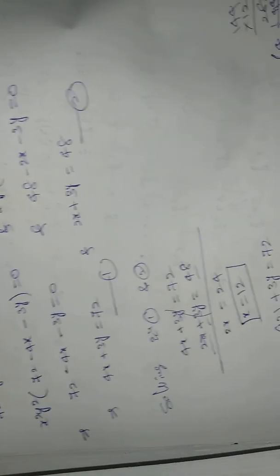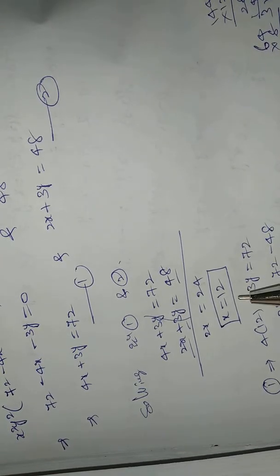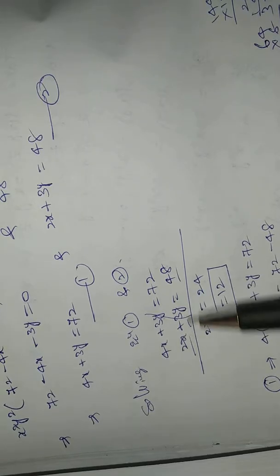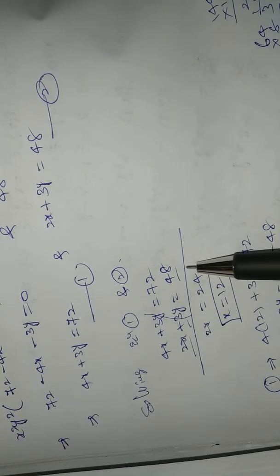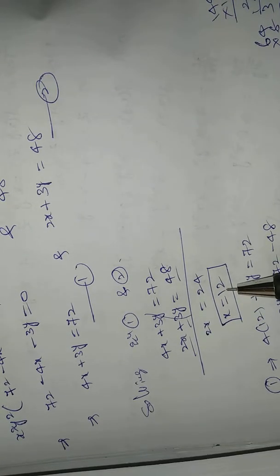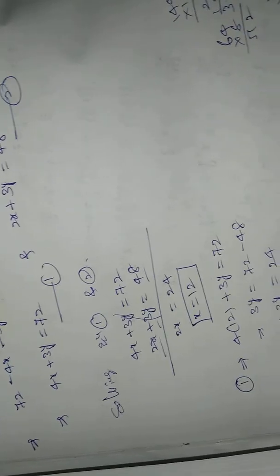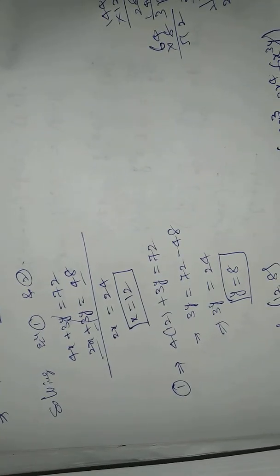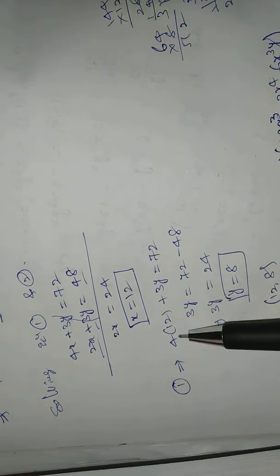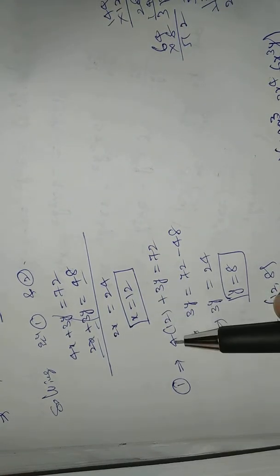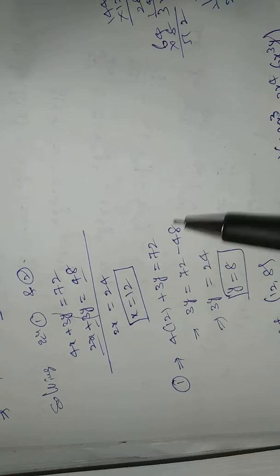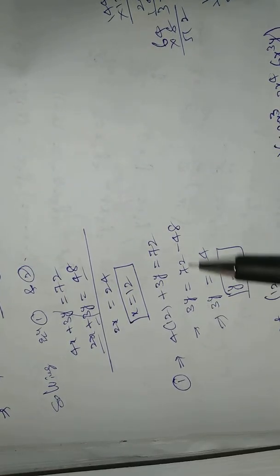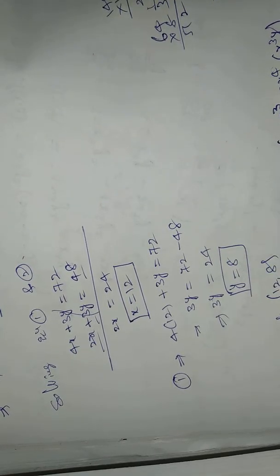Solving equations 1 and 2: subtracting equation 2 from equation 1 gives 2x equals 24, so x equals 12. Substituting x equals 12 into equation 1: 4 times 12 equals 48, so 3y equals 72 minus 48 equals 24, giving y equals 8.